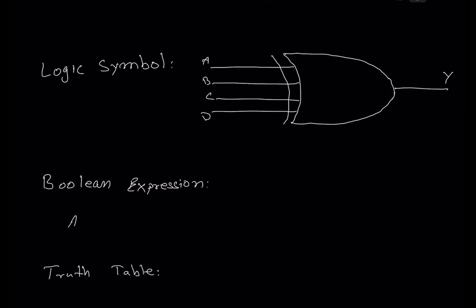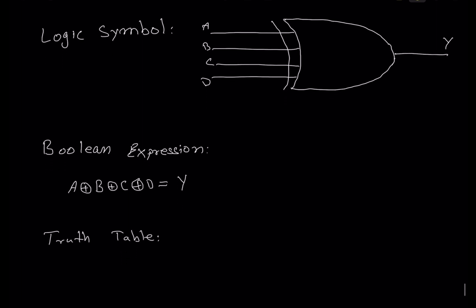The boolean expression for this logic gate will be: A exclusively OR with B, exclusively OR with C, exclusively OR with D — and that will be equal to output Y. So that's your boolean expression for the four-input XOR logic gate.